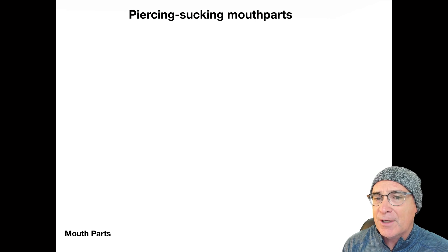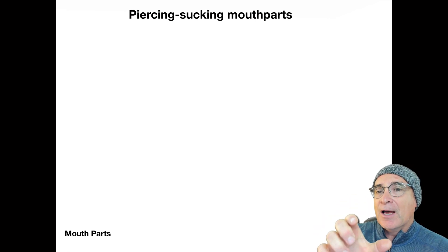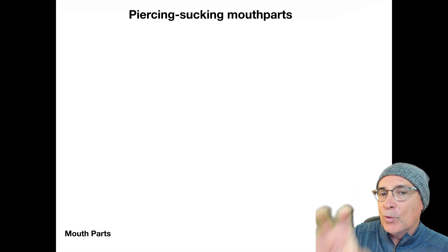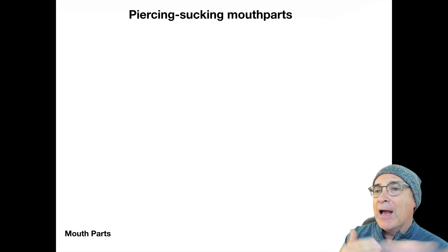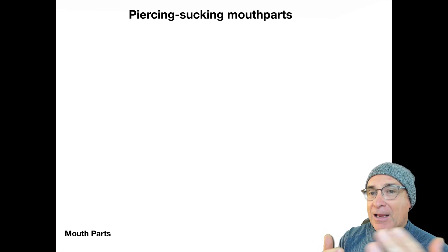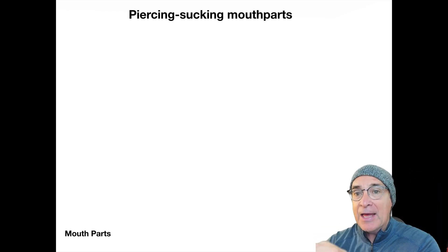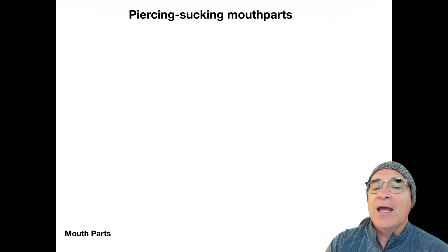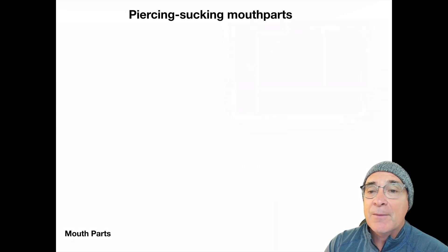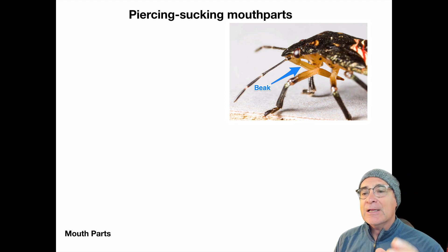There are a couple of other things very important to understand, because in some of the contests they're going to ask you not only for the name and the order, but also the mouth parts — because that tells you how they attack and eat plants. That's why they're called ag pests. These are called piercing and sucking mouth parts.